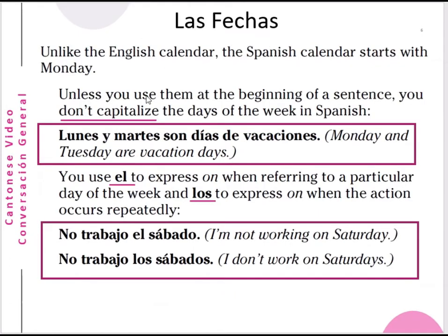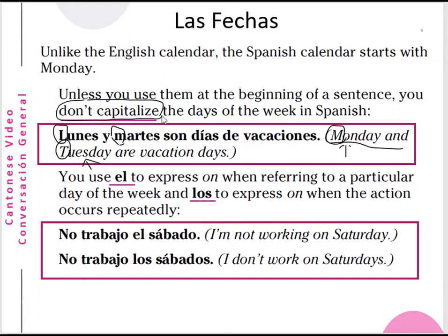Las fechas — the dates. Unlike the English calendar, the Spanish calendar starts with Monday, so Monday is the first day, not Sunday. Sunday is the last day of the week. Also, unless used at the beginning of a sentence, you do not capitalize the days of the week in Spanish. For example, in 'Monday and Tuesday are vacation days' — in English M and T are capitalized, but in Spanish: 'Lunes y martes son días de vacaciones' — only the L at the start of the sentence is capitalized; the M in martes is lowercase.